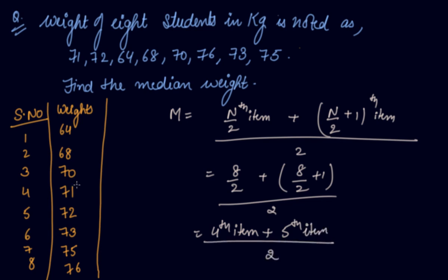Your 4th item is 71, your 5th item is 72. So 71 plus 72 divided by 2 is 71.5 kg is your median.